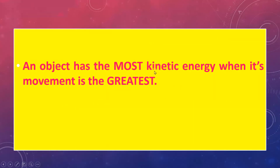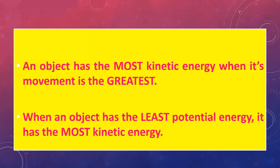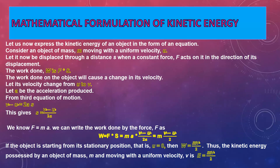An object has the most kinetic energy when its motion is greatest. When an object has the least potential energy, it has the most kinetic energy. As an object falls from a height, its height from the ground decreases, so its potential energy decreases. As it gets closer to the ground its energy converts into kinetic energy — just before touching the ground it has maximum kinetic energy and minimum potential energy.